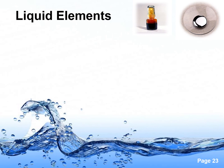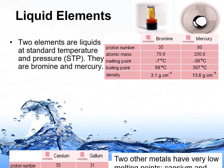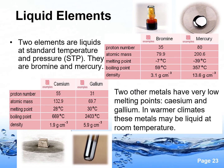Examples of liquid elements are shown in this slide. Two elements are liquid at standard temperature and pressure (STP): bromine and mercury. Another two metals have very low melting points — cesium and gallium — and in warmer climates, these metals may be liquid at room temperature.